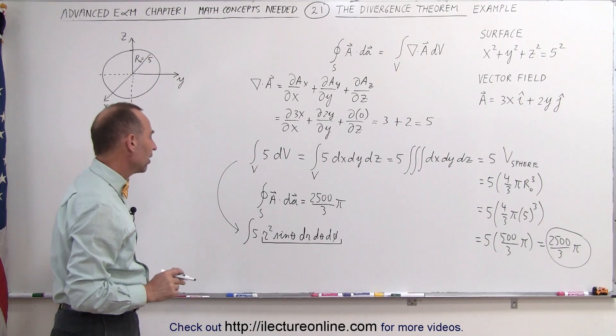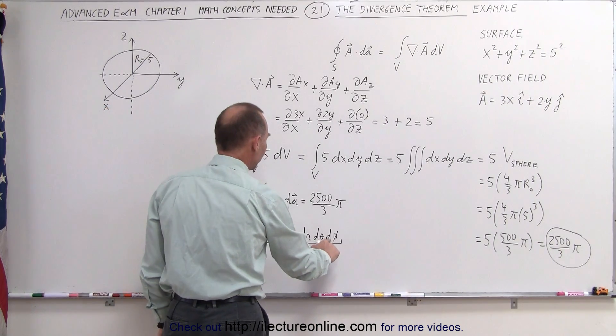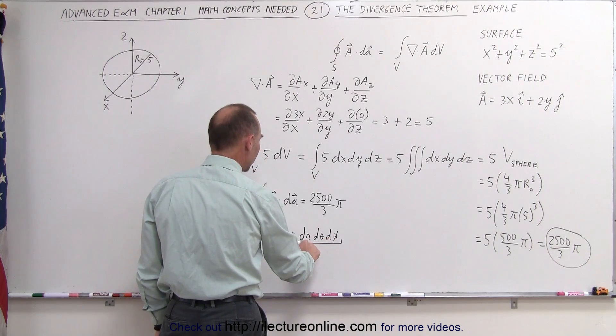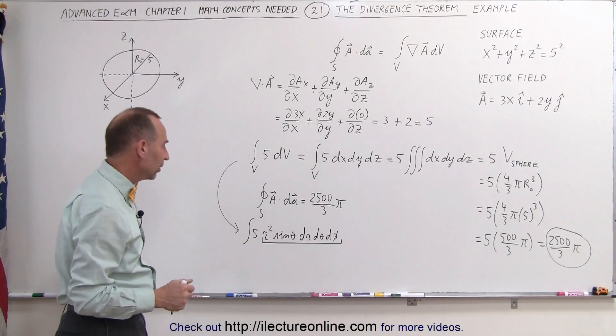The 5, of course, is a constant that can come out. And then if we integrate this 3 times, once over d phi, once over d theta, and then once over dr, we can then go ahead and find out what that is equal to.